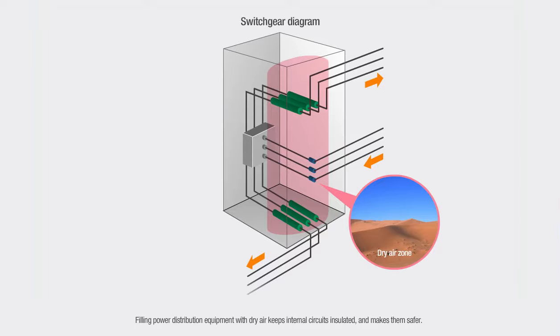Filling power distribution equipment with dry air keeps internal circuits insulated and makes them safer.